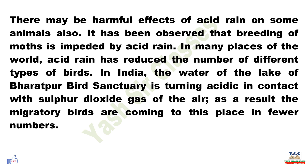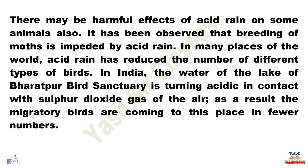There may be harmful effects of acid rain on some animals also. It has been observed that breeding of moths is impeded by acid rain. In many places of the world, acid rain has reduced the number of different types of birds. In India, the water of the lake of Varadpur bird sanctuary is becoming acidic in contact with sulfur dioxide gas of the air. As a result, the migratory birds are coming to this place in fewer numbers.